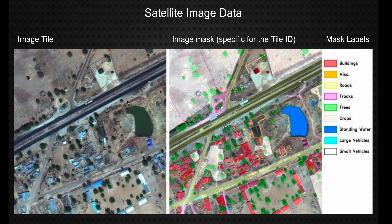On the left side is your source tile, and on the right side you have the image mask, showing the particular labels which this given tile has been classified to. Here you can see there are buildings, miscellaneous objects, roads, tracks, trees, crop, standing water, large vehicles, small vehicles — the limit could be anything you would want to train for. The only thing is that you have to provide sufficient training data so that your model can learn from the input data.